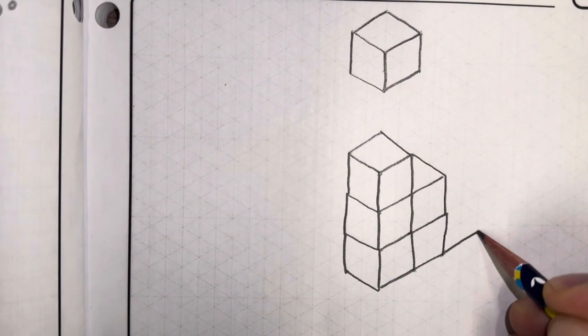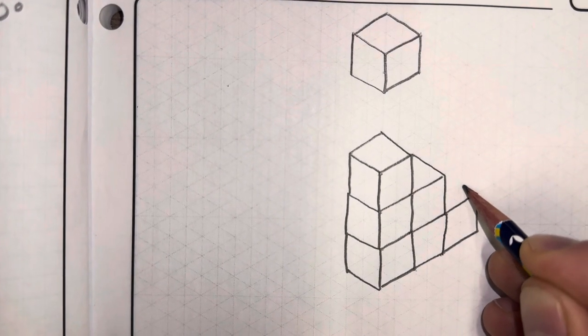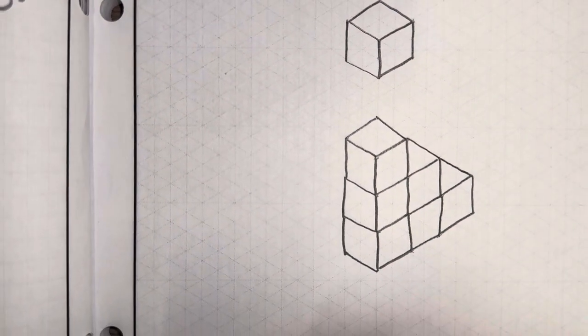So I could come over here, go over two, up two, up one over two. Again, staying on those angled lines, we can see I have that staircase there.